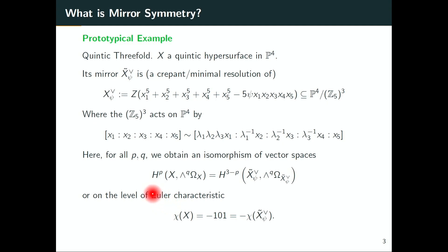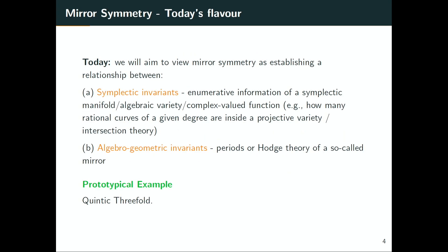The refinement was that there was an isomorphism of vector spaces on the level of Hodge numbers. That was the first kind of establishment on some cohomological level of mirror symmetry, and it was very quickly generalized to enumerative geometry.